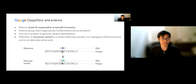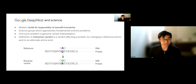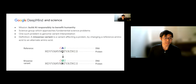A missense variant is a variant that affects a protein by changing a reference amino acid to an alternate amino acid. Mechanistically, this happens when a nucleotide letter is changed — for example, CAG coding for Q can be flipped, changing it to start coding for R. This is an example of a missense variant.